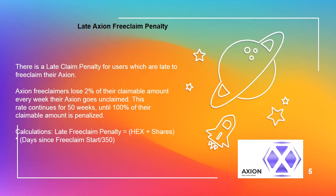Late Axion free claim penalty. There is a late claim penalty for users which are late to free claim their Axion. Axion free claimers lose 2% of their claimable amount every week their Axion goes unclaimed. This rate continues for 50 weeks, until 100% of their claimable amount is penalized.